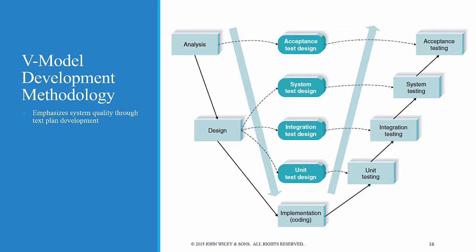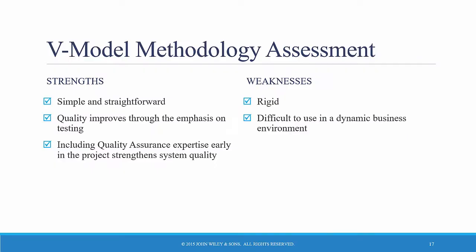A key concept of this model is that as requirements are specified and components designed, testing for those elements is also defined. In this manner, each level of testing is clearly linked to a part of the analysis or design phase, helping to ensure high-quality and relevant testing and to maximize test effectiveness. The V-model approach is simple and straightforward and generally improves overall system quality through early development of test plans — that's the hallmark characteristic of the V-model. Projects benefit from an earlier focus on testing, and quality assurance personnel's expertise increases the overall quality of the system design.